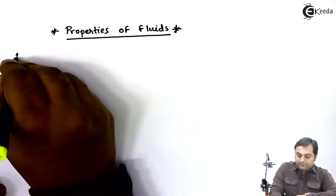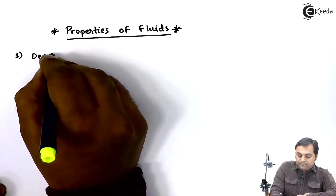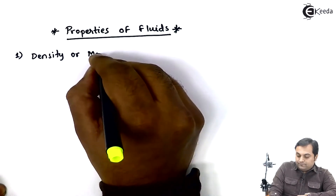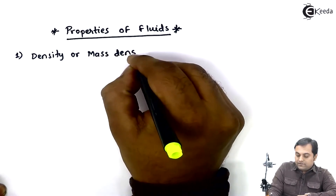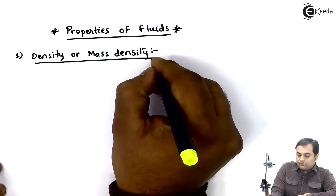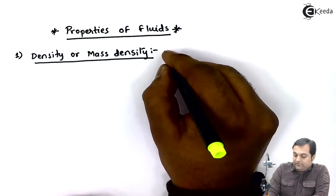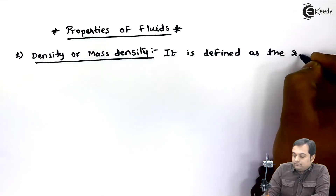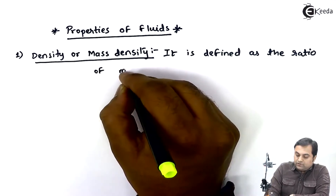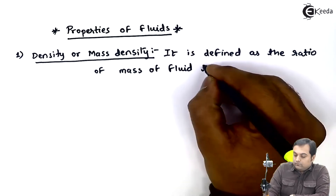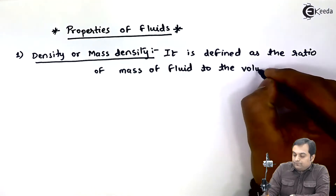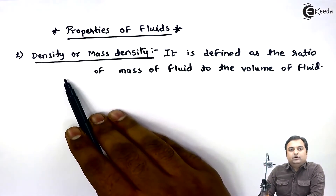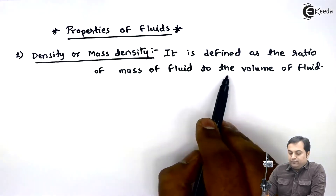I'll start with the first property that is called density, or it is also called mass density. So what is meant by density? It is defined as the ratio of mass of fluid to the volume of fluid. So mass density, or simply density, is defined as the ratio of mass of fluid to the volume of fluid.